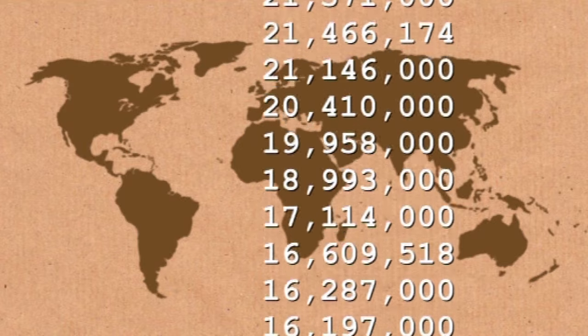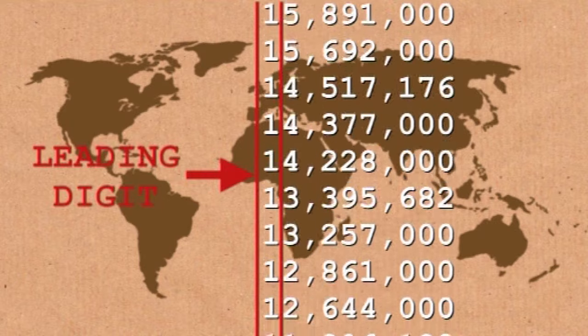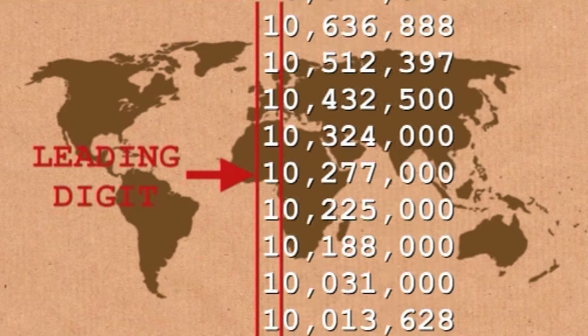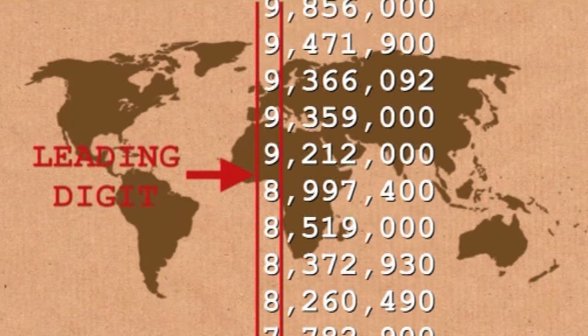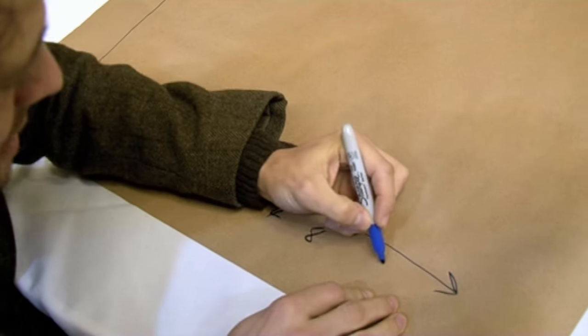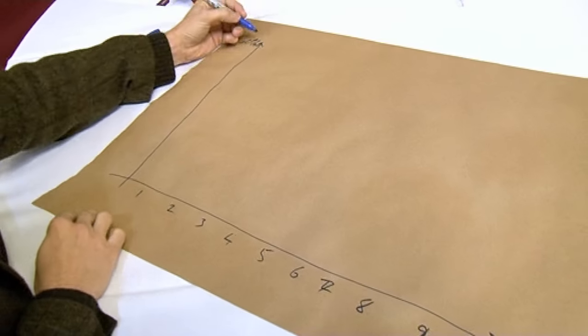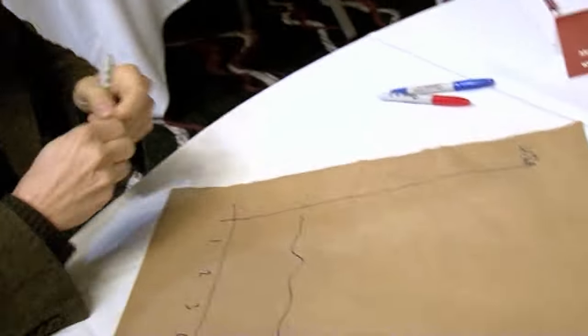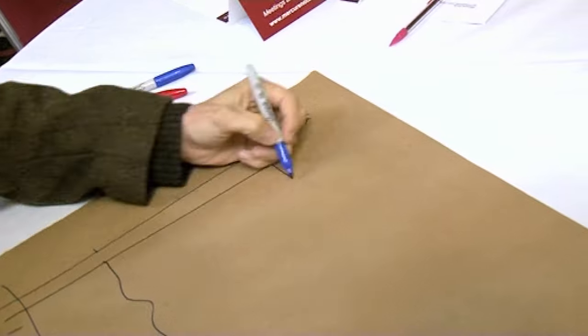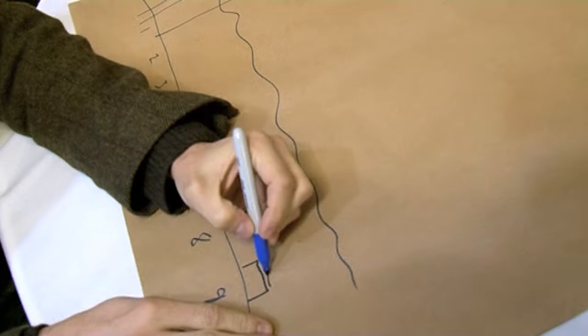If you were to think about the distribution of leading digits — some of the populations will start with a 1, some with a 2, 3, 4, 5, 6, 7, 8, or 9 — there are 9 possible leading digits. You might imagine that each one is equally likely to appear, so that's 1 in 9, about 11%. But what actually happens is that a third of the time the number starts with a 1, and it will hardly ever start with a 9. You get this brilliant curve that goes down steeply.